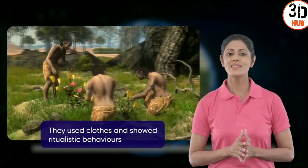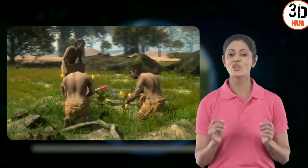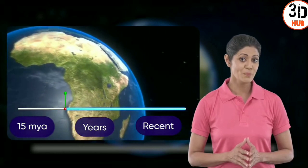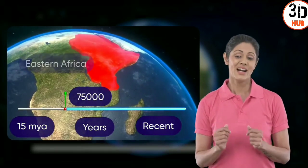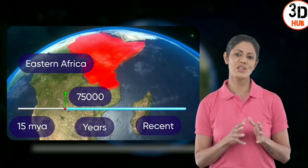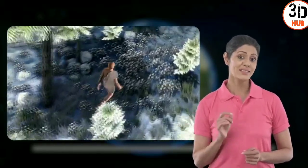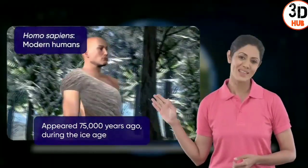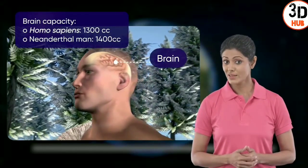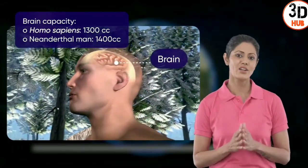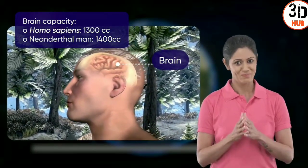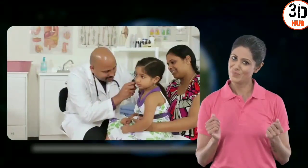Neanderthals disappeared around 40,000 years ago. The final stage in our evolution appeared in Africa between 75,000 and 10,000 years ago during the ice age: the modern human, known as Homo sapiens. Homo sapiens have brains averaging 1,300 cubic centimeters — yes, smaller than those of Neanderthals, but that doesn't mean we are less intelligent.